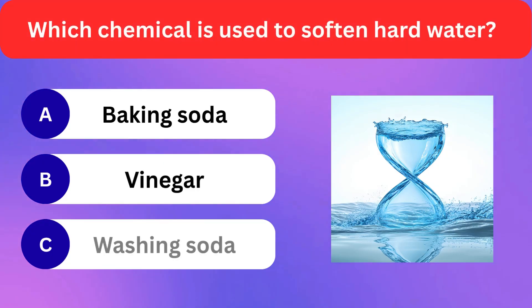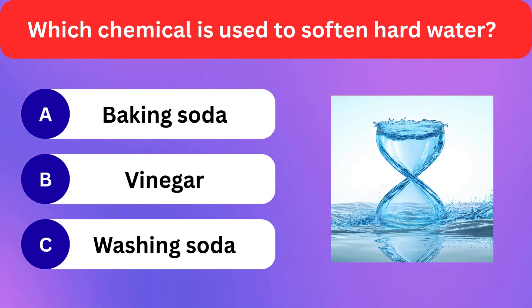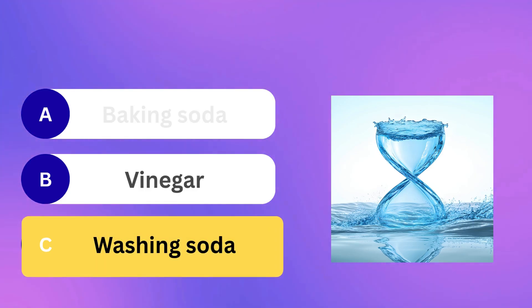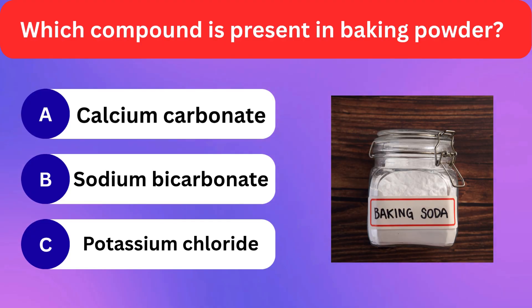Which chemical is used to soften hard water? Baking soda, Vinegar, Washing soda. Correct answer is washing soda. Which compound is present in baking powder?